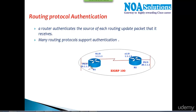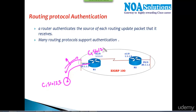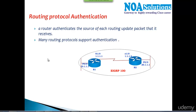We want to ensure that anyone who joins the routing group must have a password, and that password should match on both routers. If it matches, authentication is successful and the process continues — sending and receiving hello messages, updates, and all further steps. If there is a password mismatch and authentication fails, you will not be able to send or receive hello messages; packets will be discarded due to authentication failure.